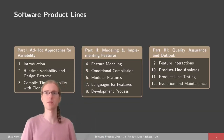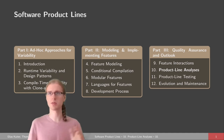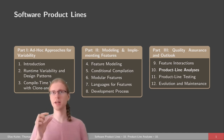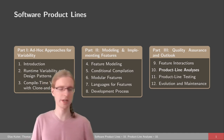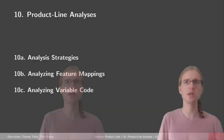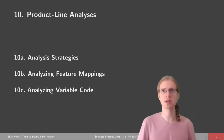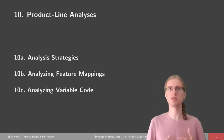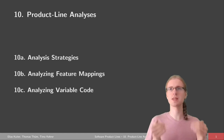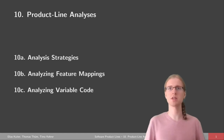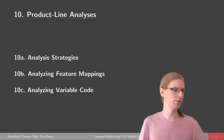We are in the third part of the product line lecture overall, which is about quality assurance. Product line analysis is one kind of group of techniques which you can do to assure the quality of your product lines. Today we are going to talk about three topics: different analysis strategies for product lines, and two examples for analyzing feature mappings and the actual code of our product lines.